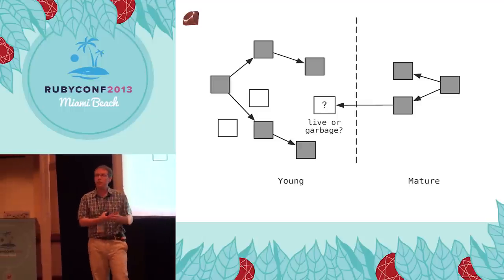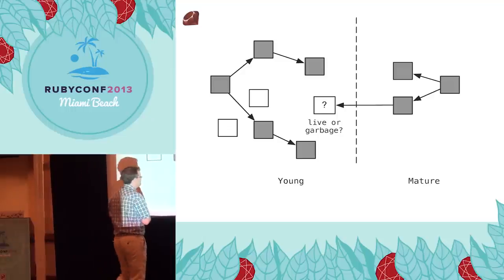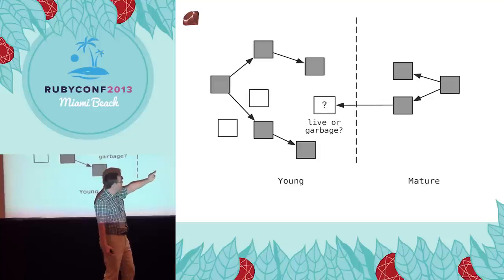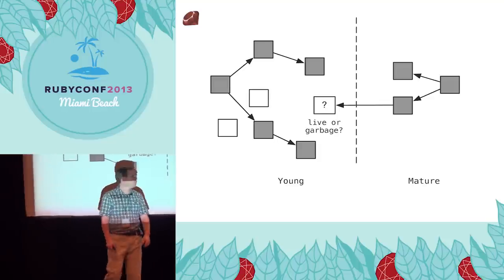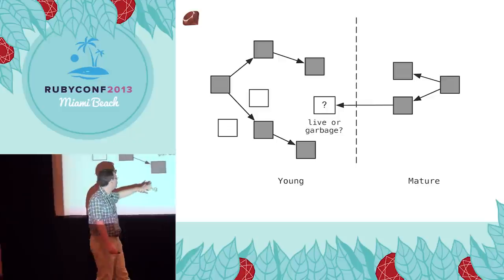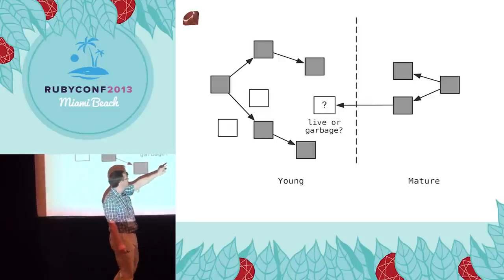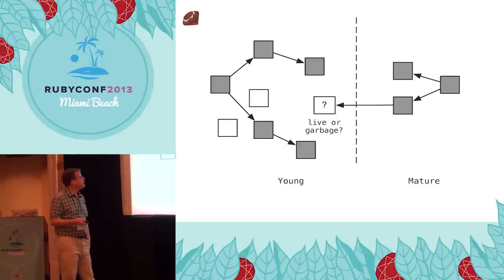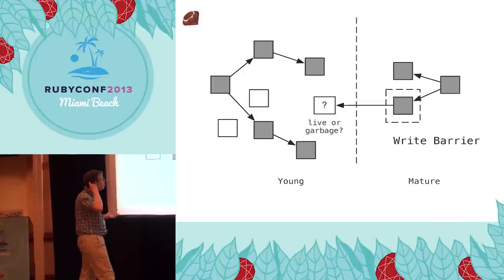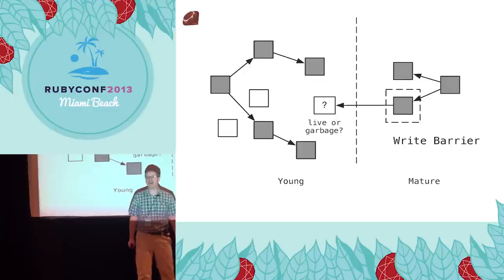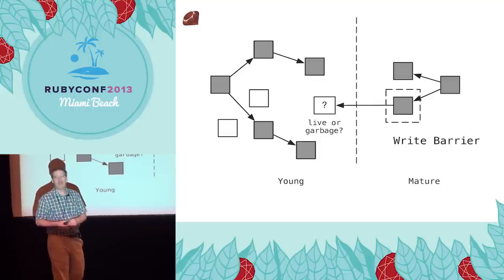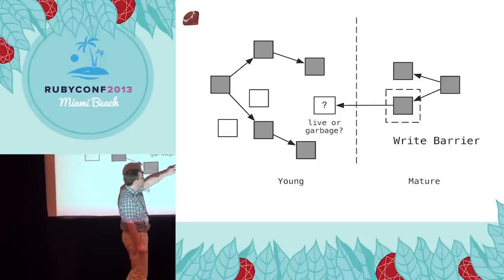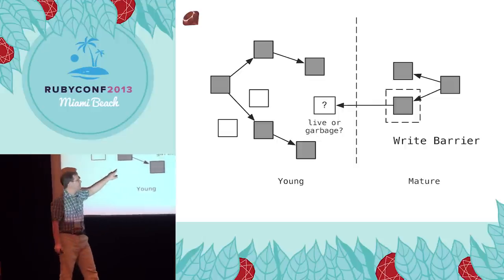But there's a similar problem to concurrent marking: what if I modify a mature object and insert a new young object into it? If I'm only marking young objects, that new object won't get marked. The same solution applies — write barriers around mature objects. When you modify a mature object, Ruby can detect it and include that object in marking so the new child also gets marked.